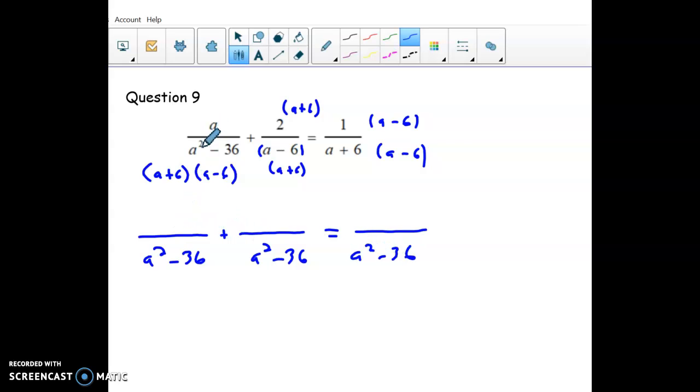Because a plus 6 times a minus 6 is a squared minus 36. And then the numerators, this first fraction we didn't multiply by anything, so the numerator is the same. Top here, I'm just going to distribute the 2, 2a plus 12. And then the other one, just take it times 1, so that would just be a minus 6.